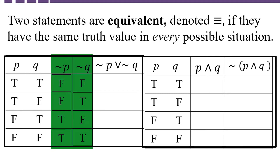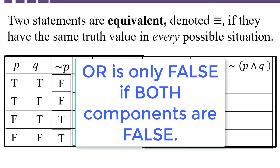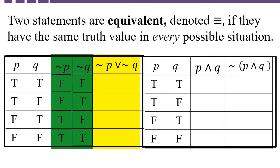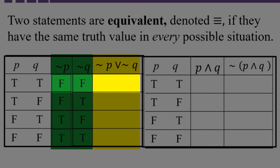Then we're going to use the third and fourth columns to get the truth value of negation of P or Q. Now remember, the rule for or is a disjunction — an or statement is only false if both components are false. The only place that happens is in row one, so all the rest are true.